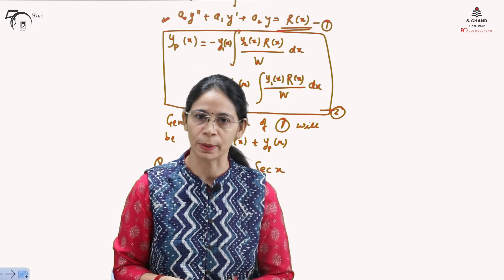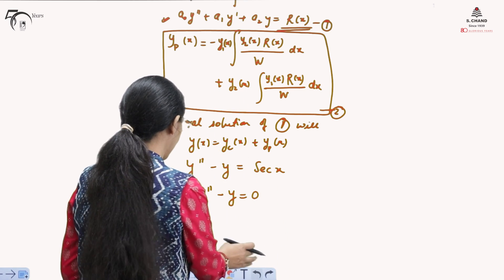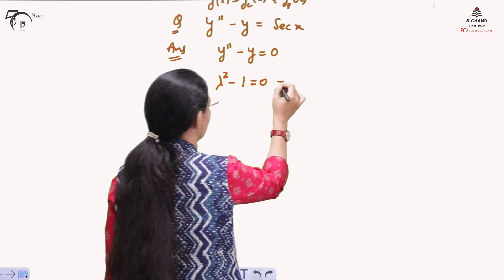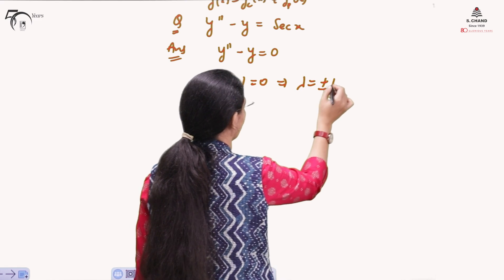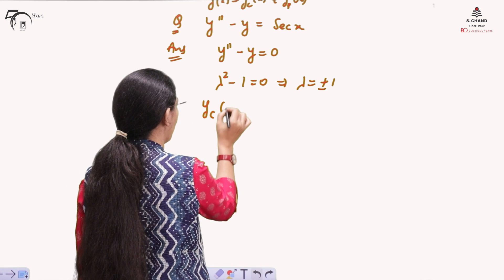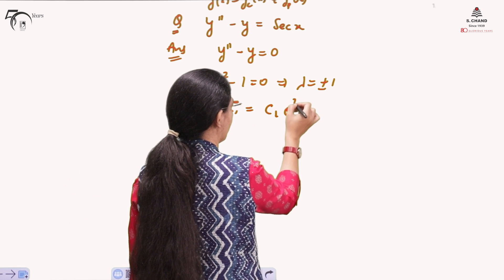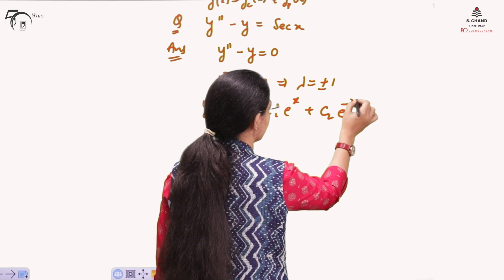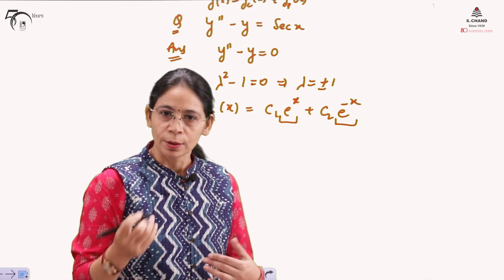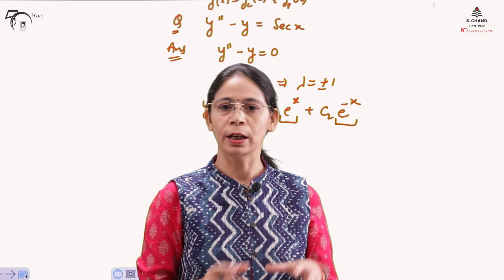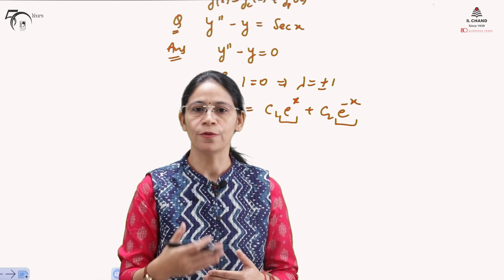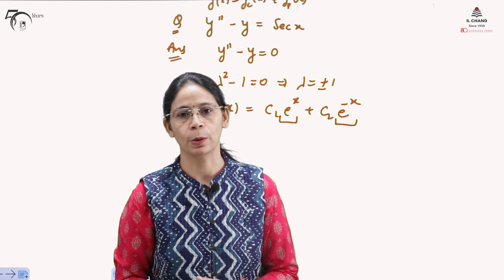The complementary function is written as Y_C(x) = C₁eˣ + C₂e⁻ˣ. Here, Y₁ = eˣ and Y₂ = e⁻ˣ. That is how the complementary function is written corresponding to the homogeneous part of the differential equation. This will now be used to find out the particular integral.